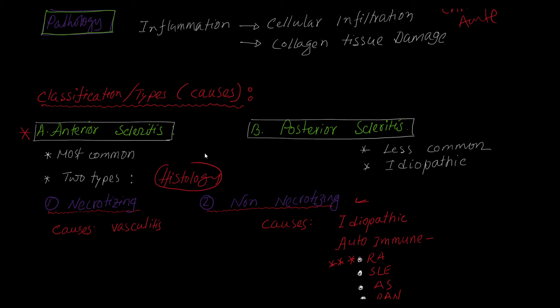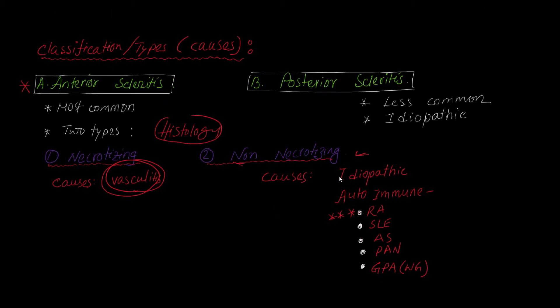What do these types mean? Necrotizing scleritis means there is some sort of necrosis present in the background of inflammation. In the case of non-necrotizing scleritis, there is no necrosis on the background of inflammation. It may be idiopathic, or there may be several causes.